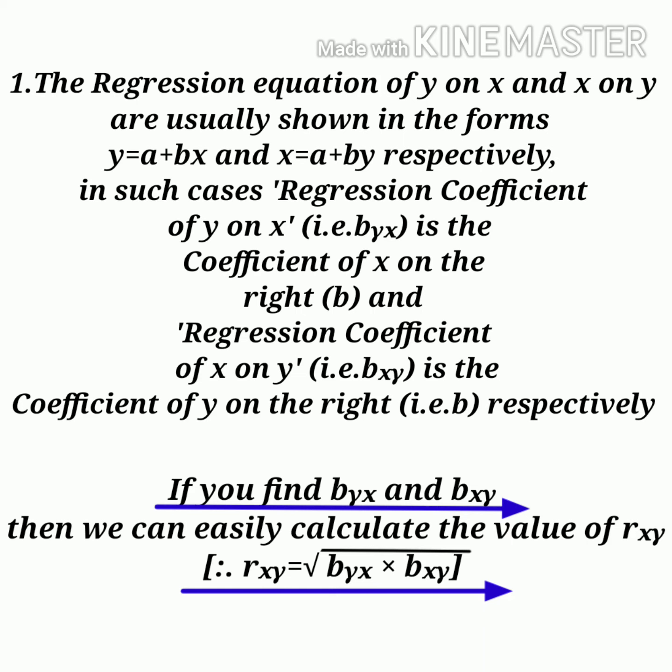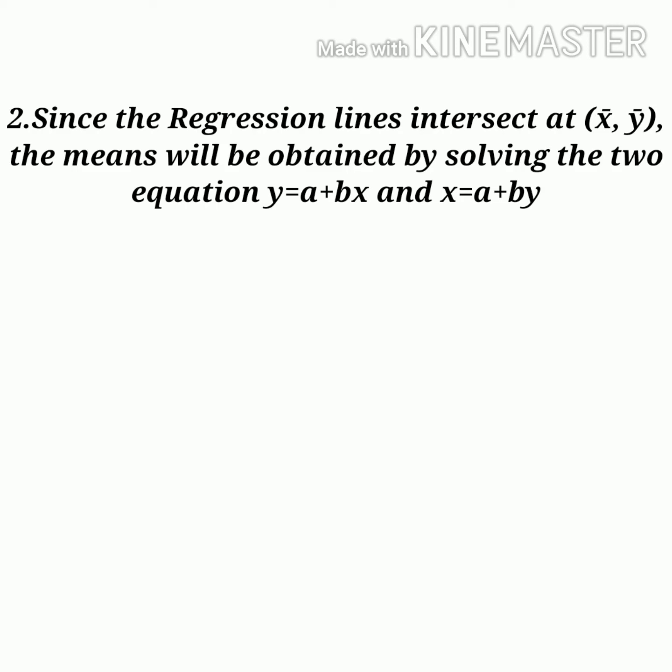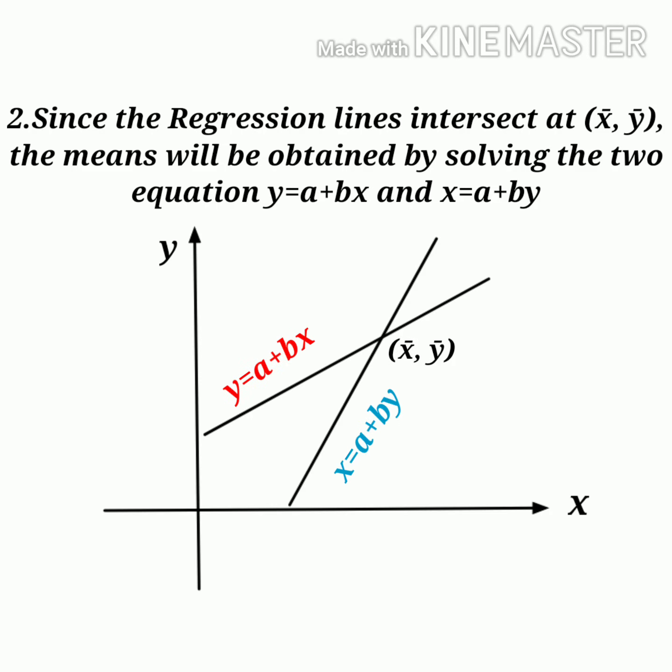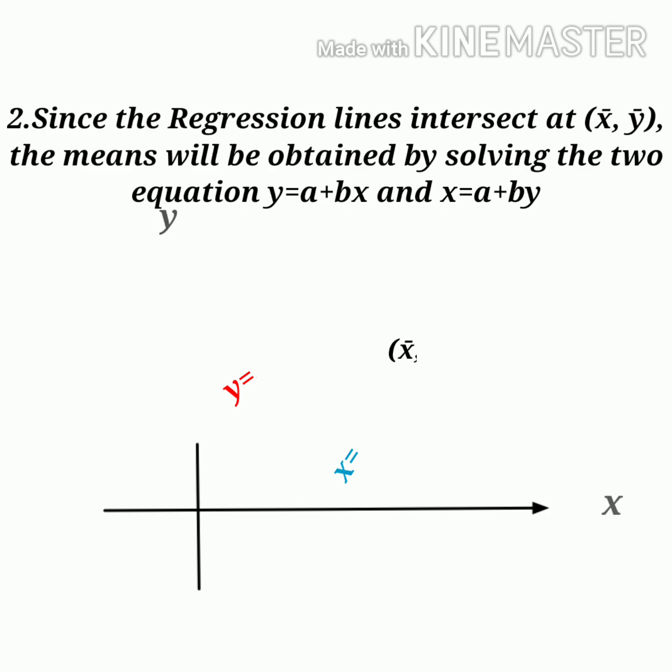You know the formula: rxy = √(byx × bxy). In the next step, you will have to calculate x̄ and ȳ. Since the regression lines intersect at x̄ and ȳ, the means will be obtained by solving the two equations y = a + bx and x = a + by that are given in the problem. You apply simple algebra and get the values of x and y, which are the actual values of x̄ and ȳ. Those are all the simple steps you need to follow to get the solution.